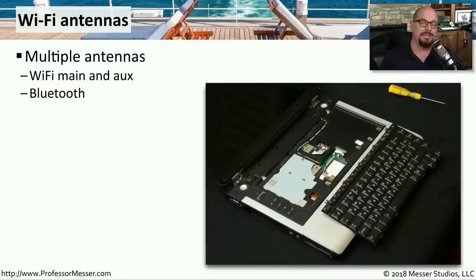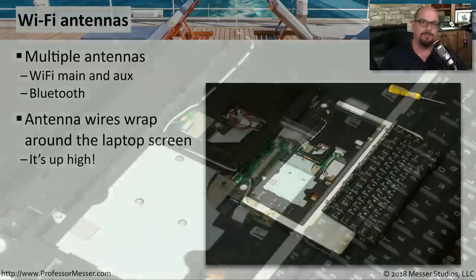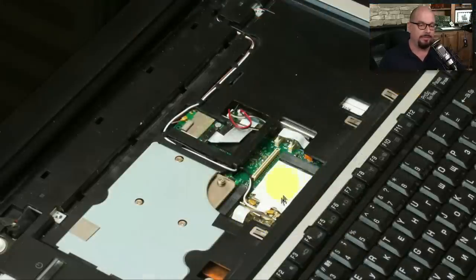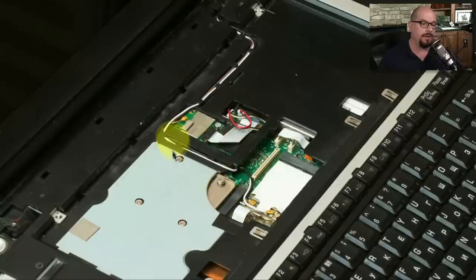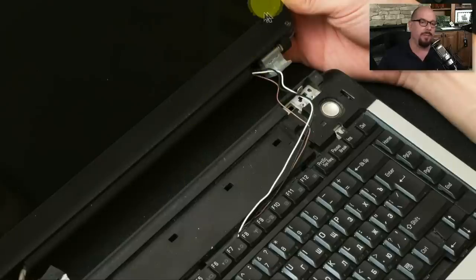A very important part of your laptop display that you don't even see are the antennas inside the screen. There are usually multiple antennas — Wi-Fi main, auxiliary connections, Bluetooth, and cellular-type connections — and they all wrap around the top of your laptop screen. That's because when you open your laptop screen, that's the highest point, so by putting them into and around that screen, we're able to get them as high in the air as possible. On this laptop, there's a mini PCI Express interface available to install an 802.11 card. You can see the wires here, and those wires wrap around the lower part of the laptop and go up high into the display to get the best signal possible.